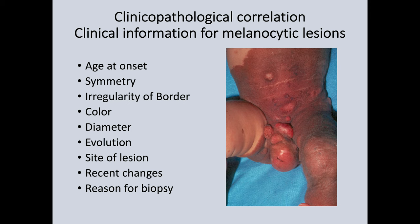The site of the lesion is very important. As I'll show you shortly, nevi about the external genitalia, particularly in females, can be wildly atypical and yet quite benign. Lastly, the reasons for the biopsy: if the clinician tells you they're worried because there was a variation in color with a very dark area at one edge, it's very important that you find that area when you look down the microscope. If it's not on the original sections, you need to do levels. It might be a combined nevus, a deep penetrating nevus, or a melanoma arising within a nevus — so levels are often necessary before you come to the definitive diagnosis.